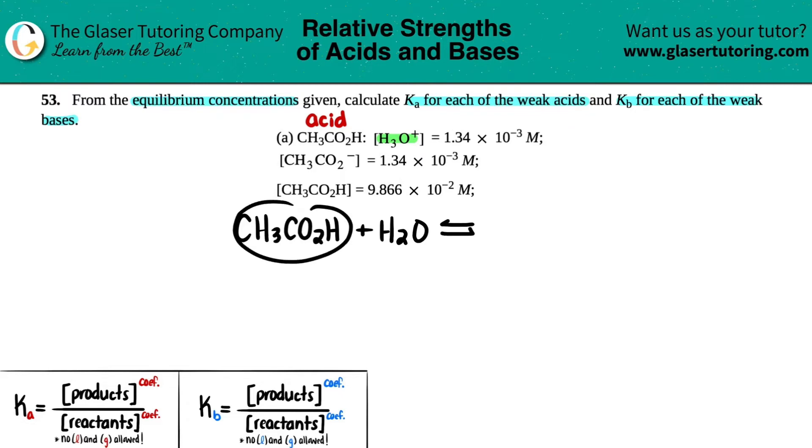Remember, the acid will drop a hydrogen, and the base will take a hydrogen. So that's why we form CH3CO2 minus, that's this guy, and then the H2O becomes H3O plus, that's hydronium. So we're at this stage.